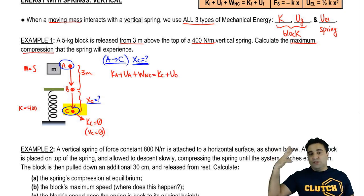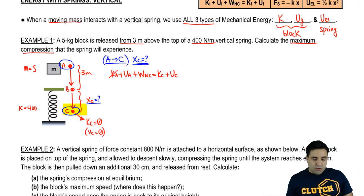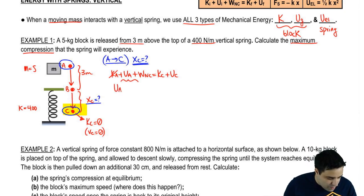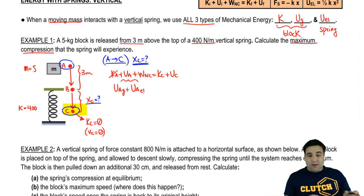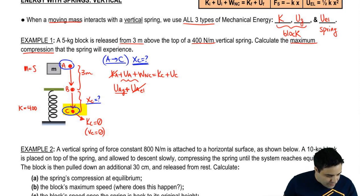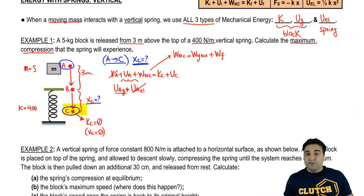So I'm going to write KA + UA + work non-conservative = KC + UC. The block is released, presumably, from rest. You can assume that, so the kinetic energy will be zero. There's no speed. Potential energy, remember, there's two types of potential energy. I'm going to split them up here. There's gravitational potential energy and elastic potential energy. Well, I mean, there could be these two types of energies. In this case, you have a height, but you don't have spring compression, so the only one you have is gravitational. Work done by non-conservative forces, if you remember, is the work done by you. You're not doing anything. There are no external forces. You're just watching, plus the work done by friction. There's no reference to friction, so we're going to assume that there is no friction. This whole thing is gone.